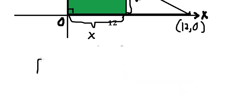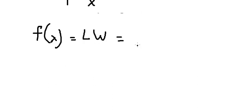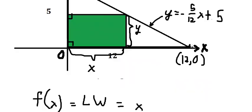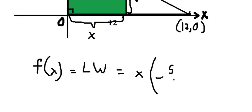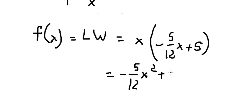The area of the rectangle is length multiplied by width, so A(x) = x times y. Substituting y = (-5/12)x + 5, we get A(x) = (-5/12)x² + 5x.